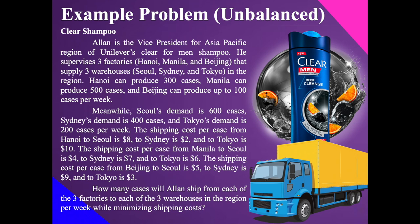Meanwhile, Seoul's demand is 600 cases, Sydney's demand is 400 cases, and Tokyo's demand is 200 cases per week. The shipping cost per case from Hanoi to Seoul is $8, to Sydney is $2, and to Tokyo is $10. From Manila to Seoul is $4, to Sydney is $7, and to Tokyo is $6. From Beijing to Seoul is $5, to Sydney is $9, and to Tokyo is $3. How many cases will Alan ship from each factory to each warehouse per week while minimizing shipping costs?